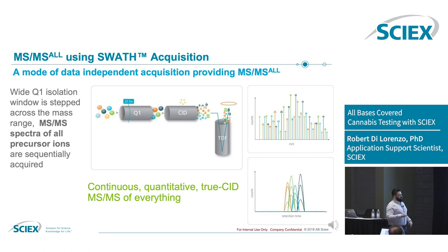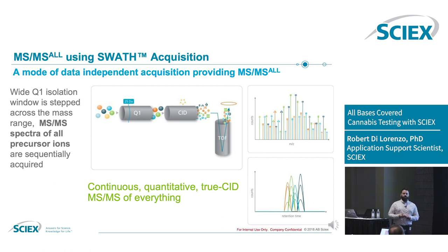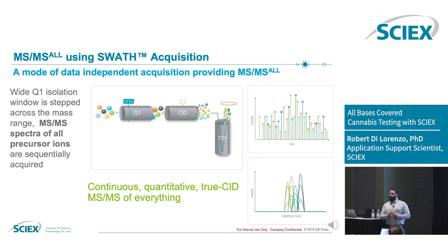You get continuous and quantitative true collision dissociation of everything. The one drawback is that your product ion spectrum can be a little less selective because you've opened up the quadrupole to 25 Daltons, but this is generally not an issue if you have any decent chromatography, and software is able to deconvolute spectra really well if necessary.